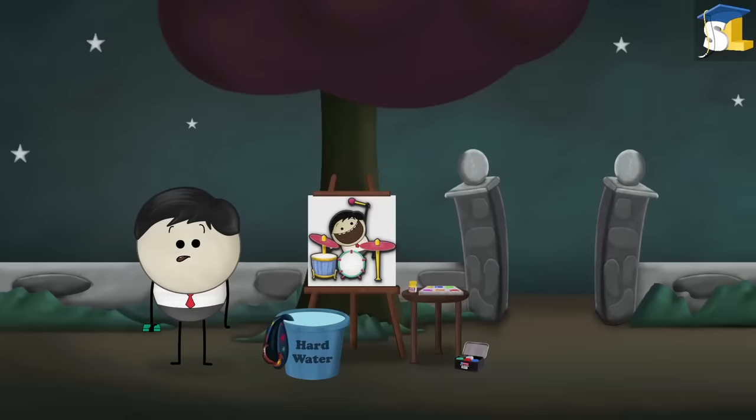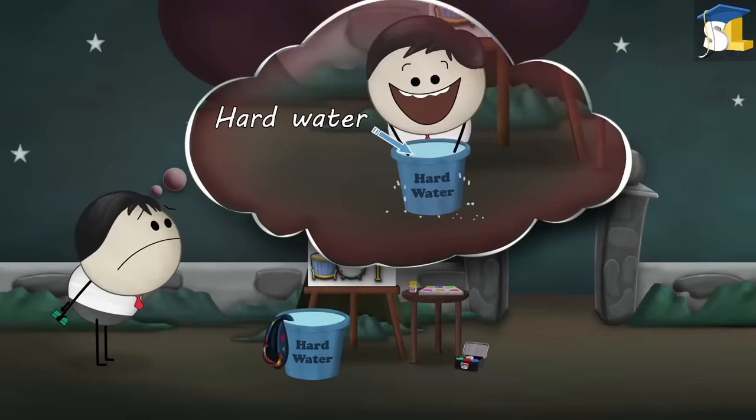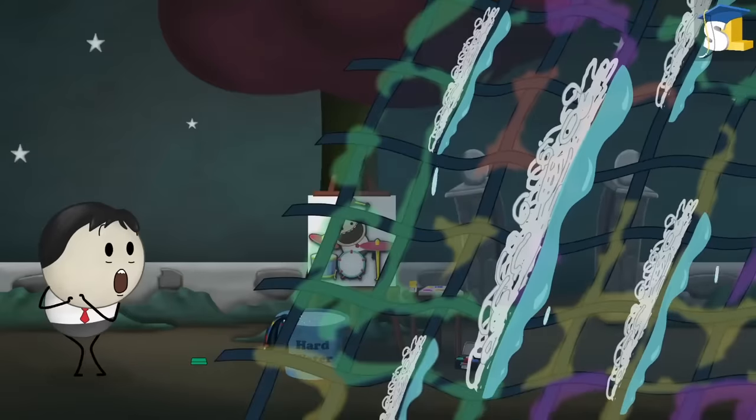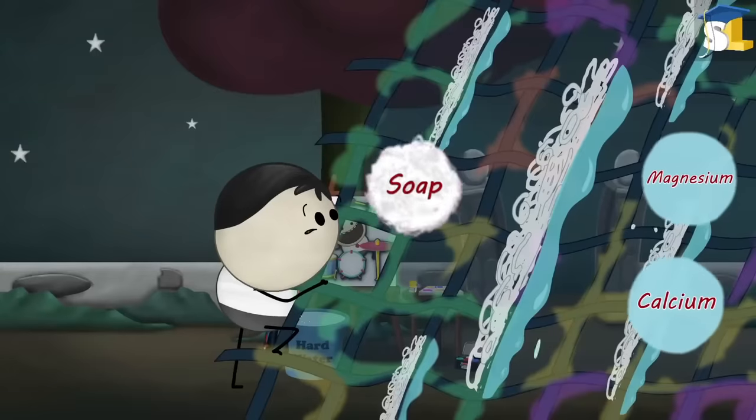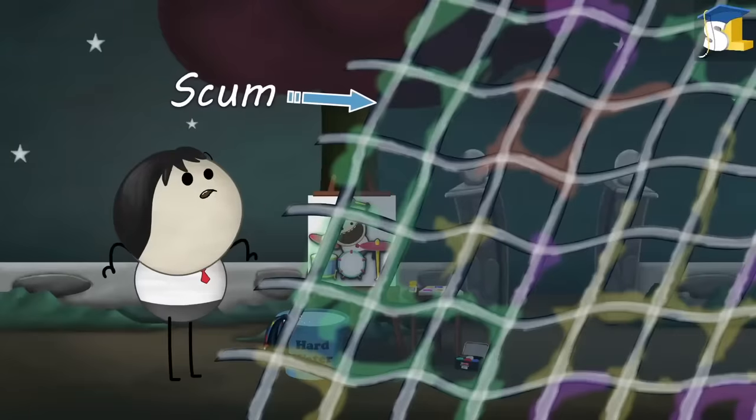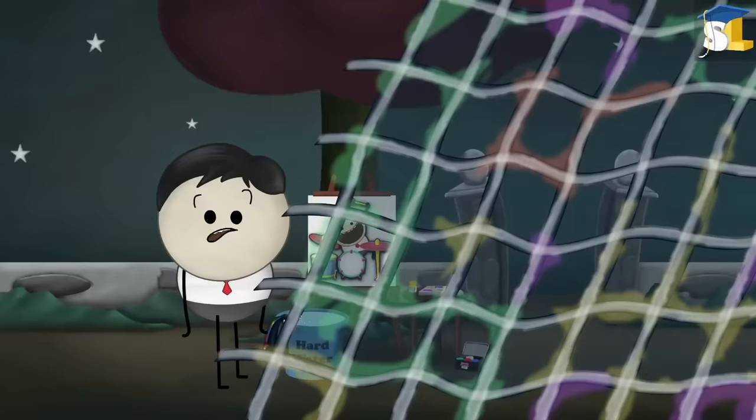Now, to understand what actually happened, let us recall the activity. Initially, you drenched your clothes in hard water and then you applied some soap. When we apply soap, it reacts with the calcium and magnesium ions of hard water to form insoluble precipitate called scum. Scum sticks to the clothes, restricting the cleansing ability of the soap.